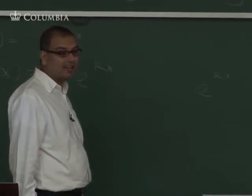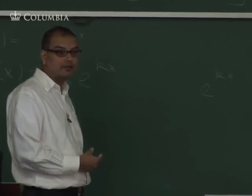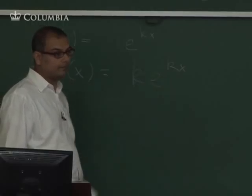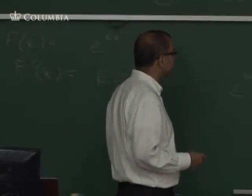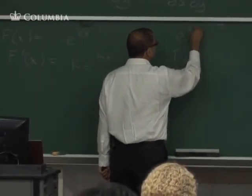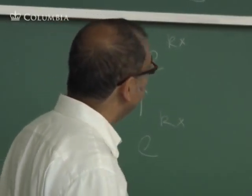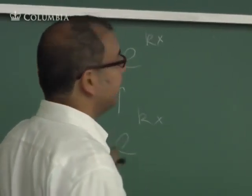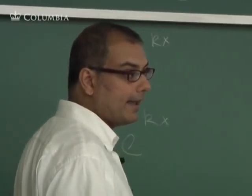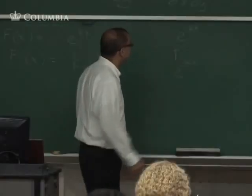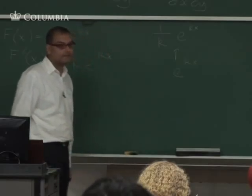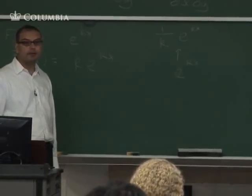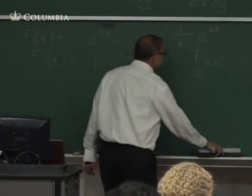The exponent is not going to change — that's the feature of the exponential function. When I took this derivative, the exponent didn't change, unlike polynomial functions. So the antiderivative is going to involve e to the kx. But if I took the derivative of e to the kx I'd get k times e to the kx, and I don't have a k here, so I have to divide by k — that's 1 over k.